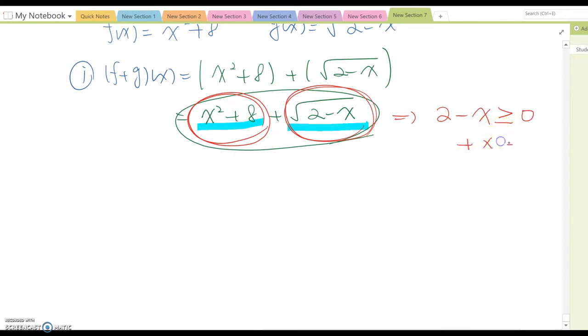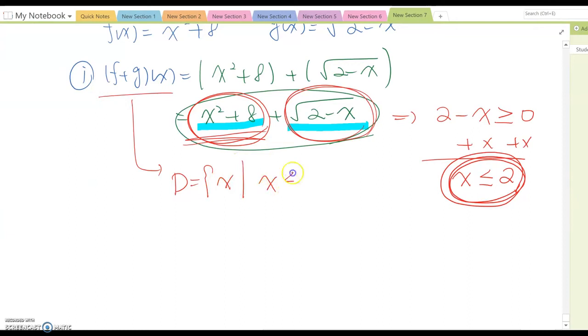Then you combine x both sides, then become x must be less than or equal to 2. So, okay, so we have to follow this domain, even though it follows all real numbers. Therefore, this combined function domain equals x, x is less than or equal to 2.